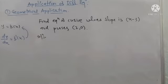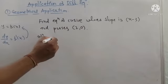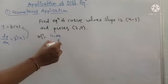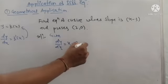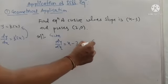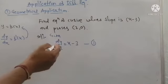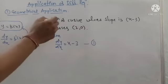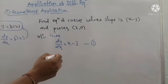In this example, we are given the slope as x minus 3. So dy/dx = x minus 3 — this is equation number 1, a differential equation. We solve it to get the solution in terms of y and x, which gives us the equation of the required curve.